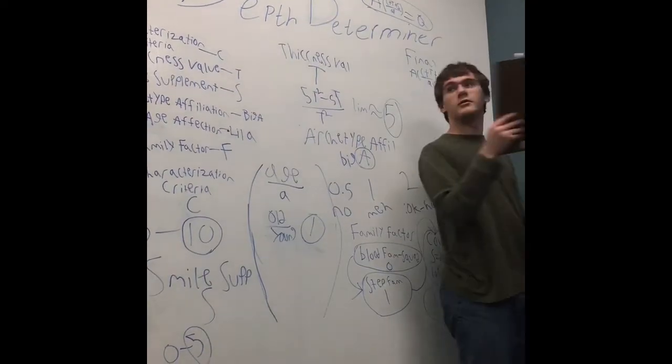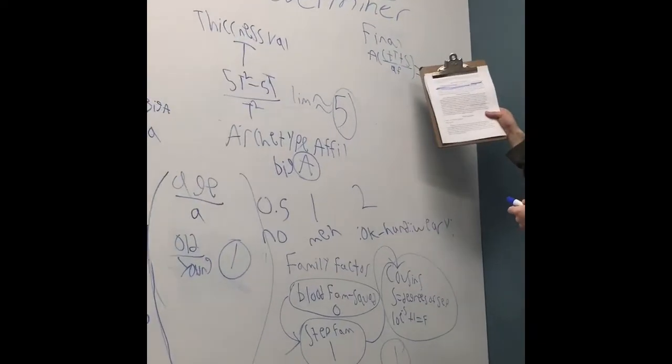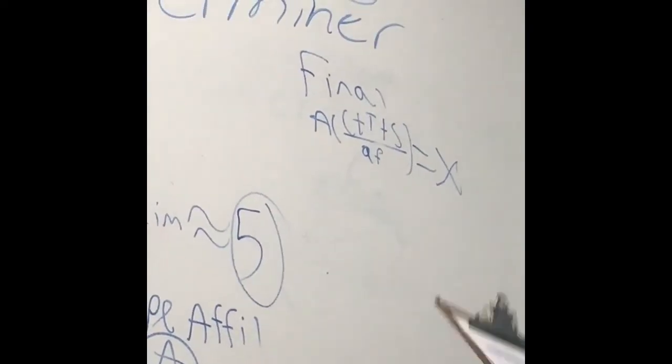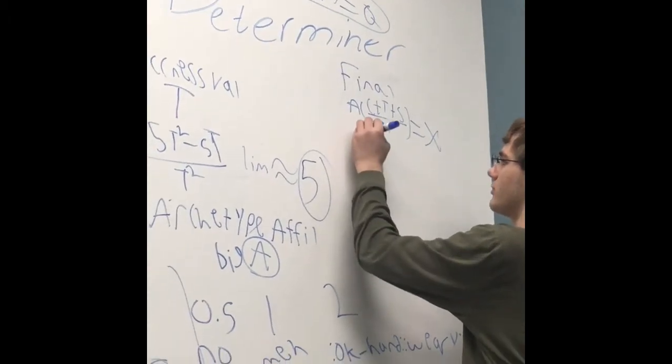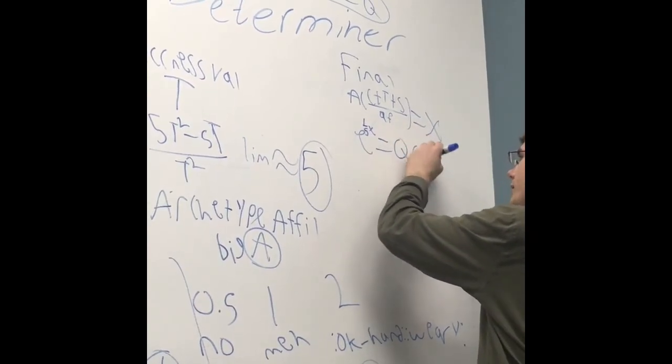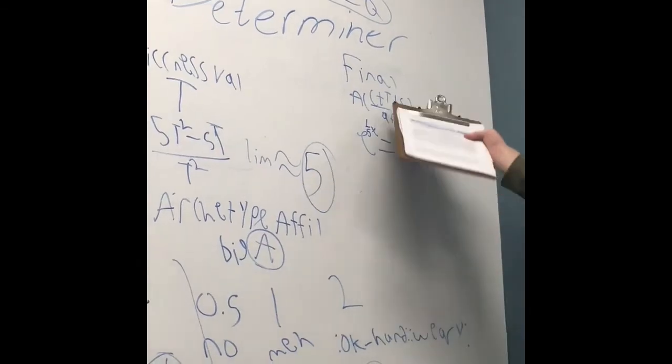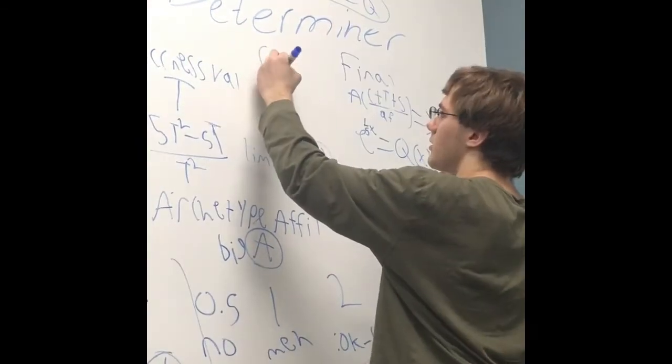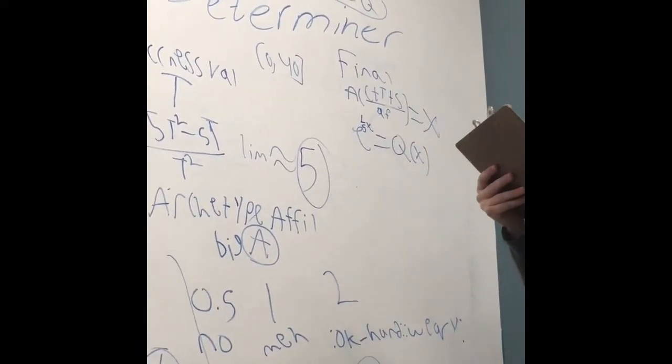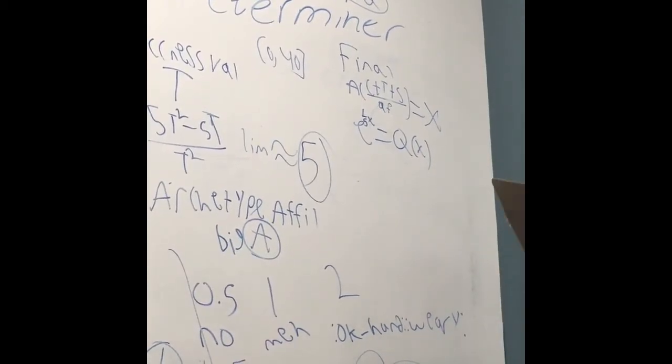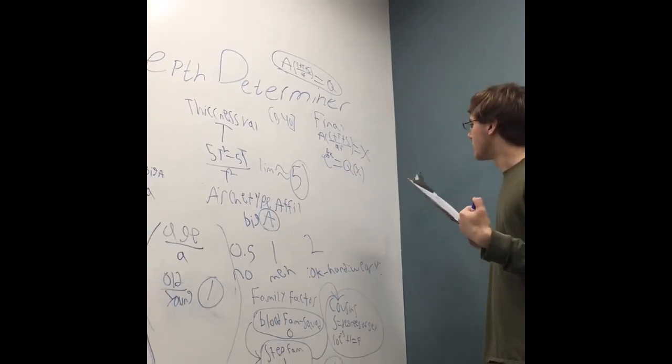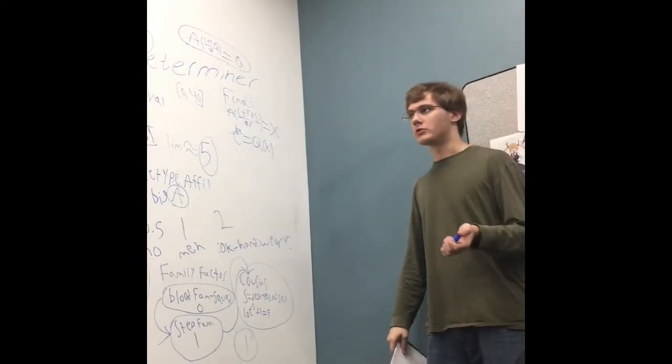Now for your final equation, it will be given by this: archetype affiliation times characterization criteria, plus thickness value, plus smile supplement, all over age affection times family factor. That will give you your x value, which you then plug into the equation e to the one-fifth x, which gives you your q of x. Now the maximum value you can get for your x, we worked out to be around 40. And a value of 40 for this would give you a final y value of approximately 3,000, give or take about 50. This is the meat and potatoes of a good waifu, so you should do this last. But yes, your optimum value will be about 2,950.